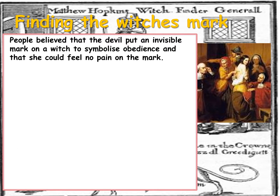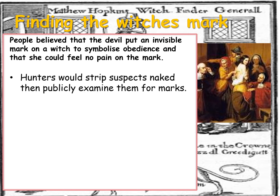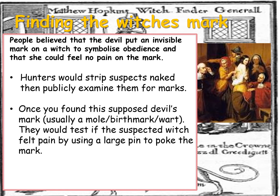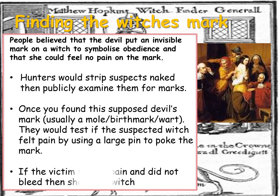Next is finding the witch's mark. People believed that the devil put an invisible mark on a witch to symbolise obedience, and that she could feel no pain on that mark. Hunters would sometimes strip suspects naked and publicly examine them for marks on their body. Once a supposed devil's mark was found — usually a mole, a birthmark, or a wart — they would test if the suspect felt pain by using a large pin to poke the mark. If the victim felt no pain and did not bleed, she was seen to be a witch.